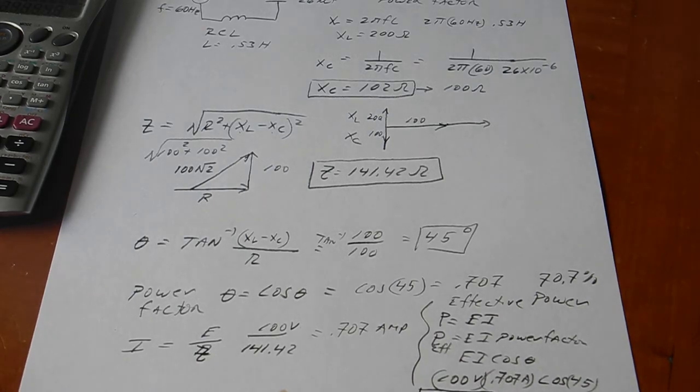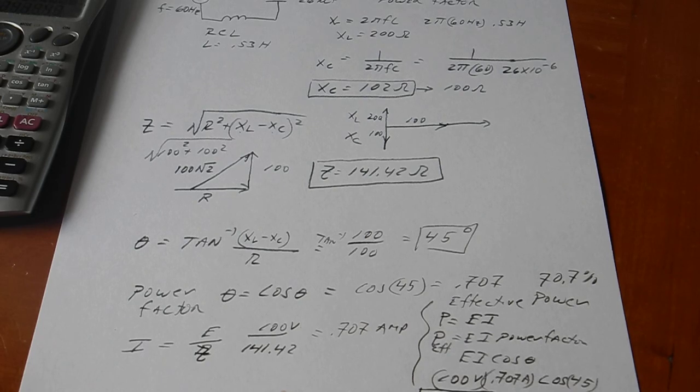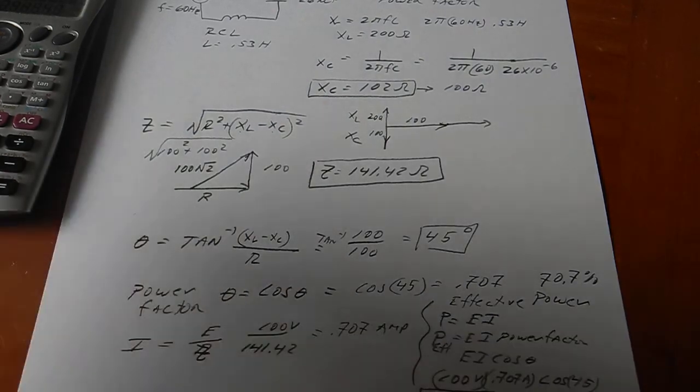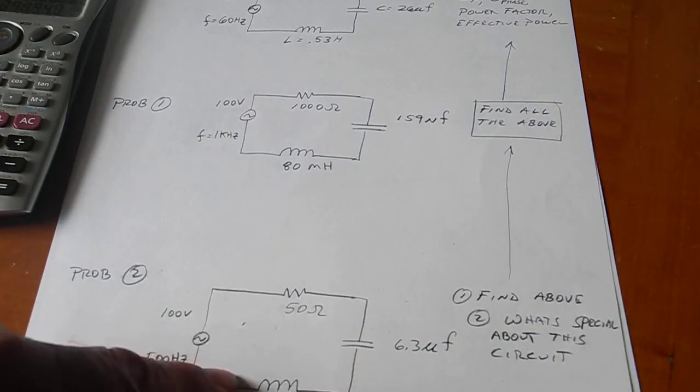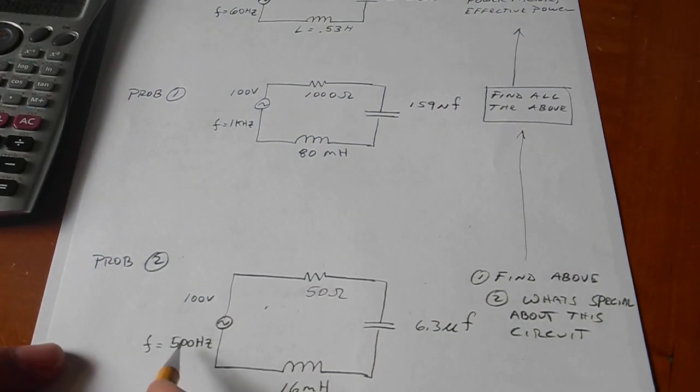So, I'm going to give you guys one on a PDF to download and work. There will be two problems. One of them will be kind of a special case. And what you're supposed to do is tell me what's special about it. So, it will look like this. This problem. And this is the special problem. So, the special problem is 500 hertz, 50 ohms, 16 millihenries, 6.3 microfarads.